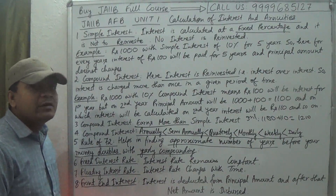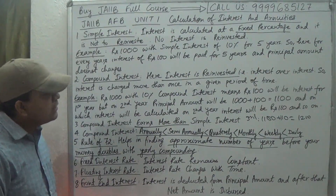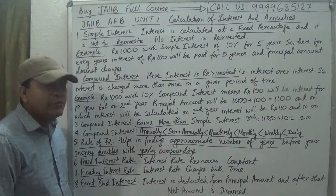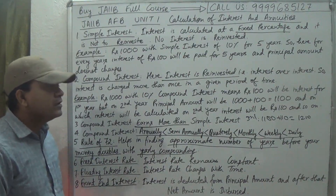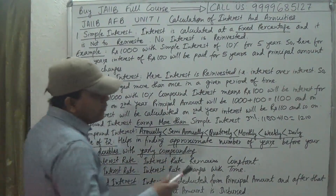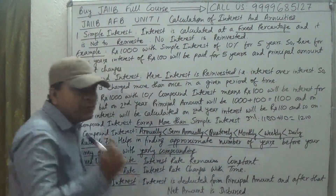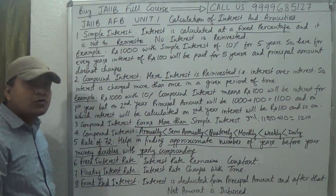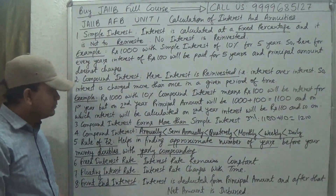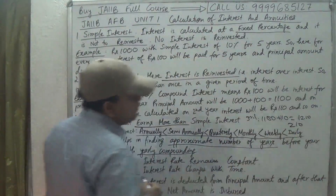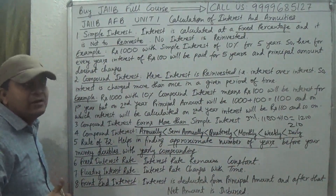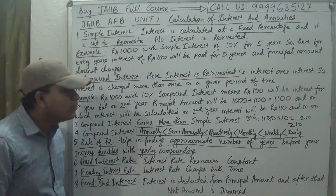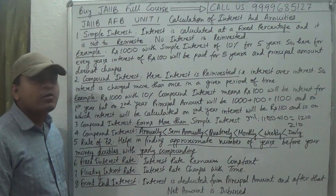Example: one thousand rupees with ten percent compound interest. For the first year, interest is 100 rupees. In the second year, the principal becomes 1000 + 100 = 1100 rupees, so interest becomes 110 rupees. In the third year, principal is 1100 + 110 = 1210 rupees, and interest becomes 121 rupees. The fourth year: 1210 + 121 is added, and so it goes on.